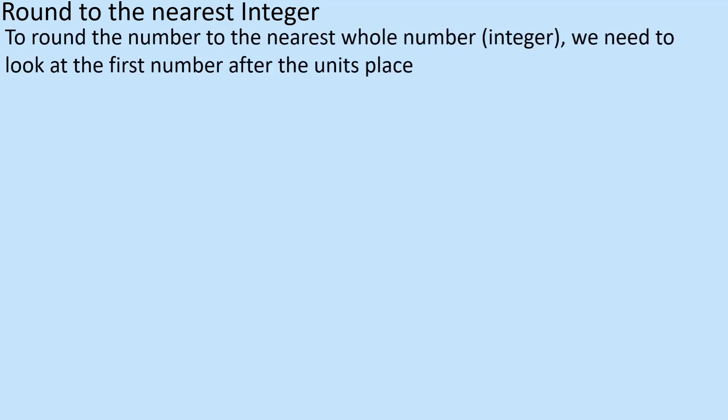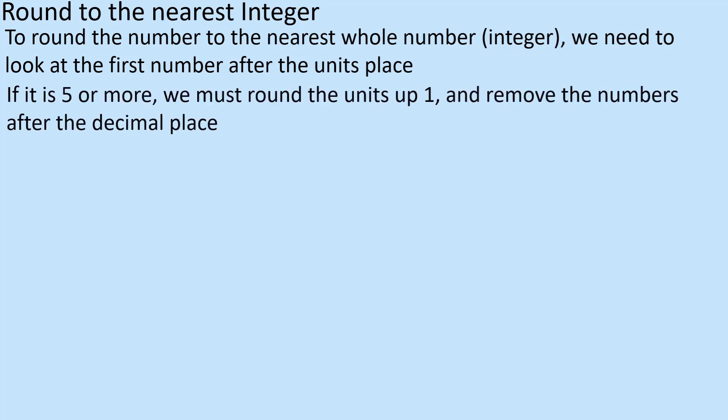When we're looking at rounding to the nearest whole number or integer, you're going to look at the first number after the units or ones place — basically your first decimal place — and that's going to determine whether or not we round up or down. If it's five or more, so this is the first decimal place after the ones or units, then we round the units up by one.